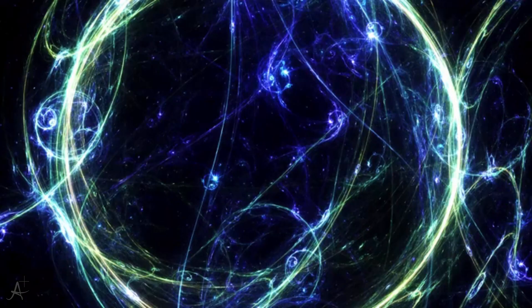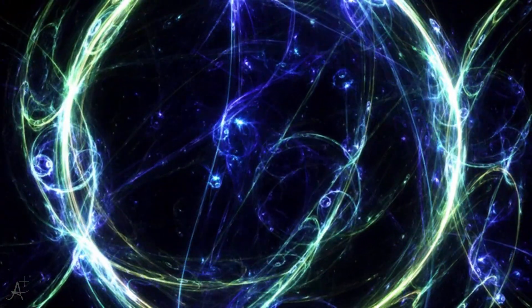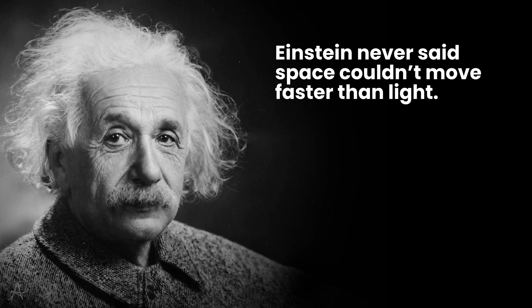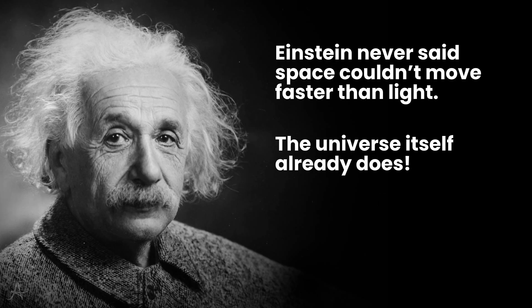What if there were loopholes in the laws of physics? Ways to move faster than light without technically breaking the rules? Because here's the trick. Einstein never said space itself couldn't move faster than light. Only that objects within space couldn't. The universe itself, on the grandest scales, already does this.